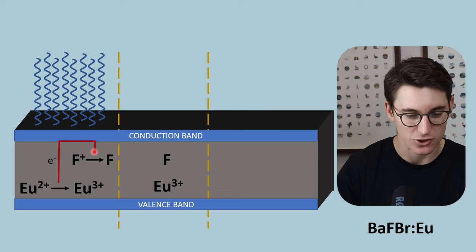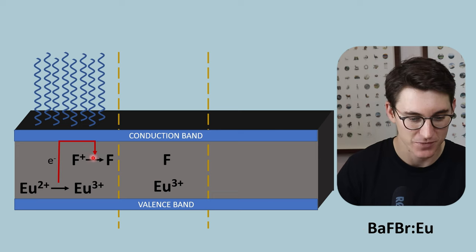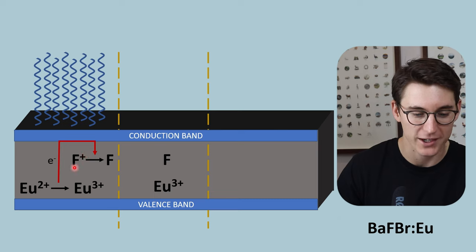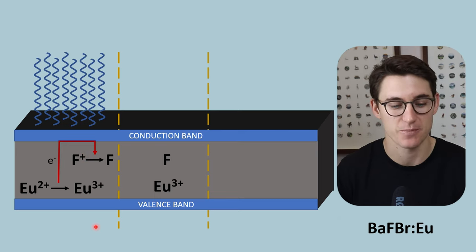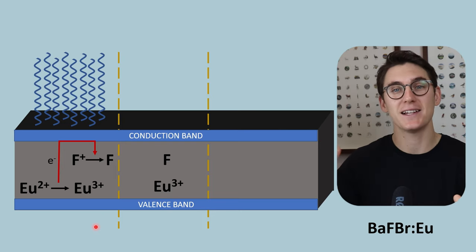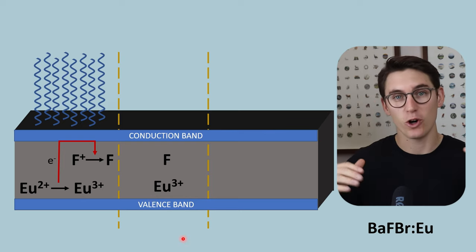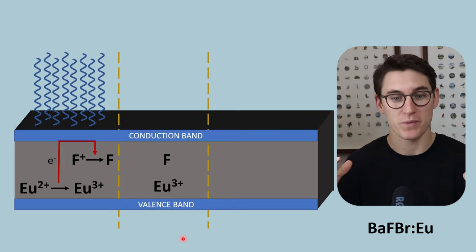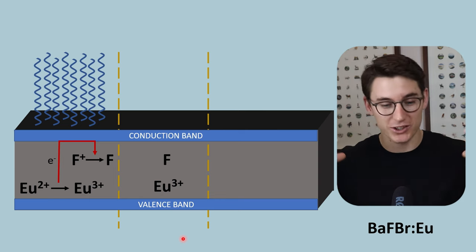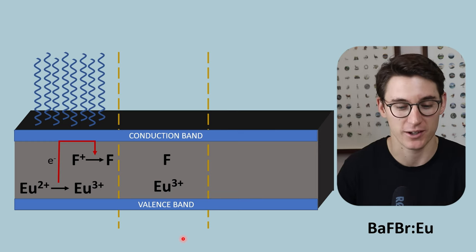These F-centers are made up of the fluoride atoms within our barium fluorobromide crystals — relatively positively charged fluoride atoms known as F-centers. A disrupted crystalline structure like this develops a valence band and a conduction band. The valence band is a lower energy state with many electrons available, and the conduction band is a theoretical energy level requiring applied energy for electrons to reach it.